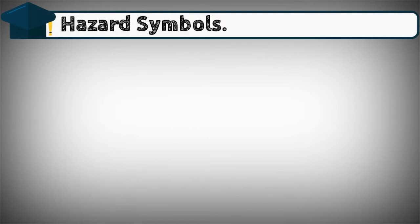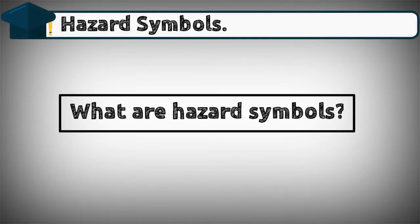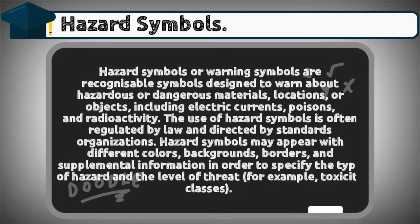Hazard symbols: what are hazard symbols? Hazard symbols or warning symbols are recognizable symbols designed to warn about hazardous or dangerous materials, locations, or objects, including electric currents, poisons, and radioactivity. The use of hazard symbols is often regulated by law and directed by standards organizations.